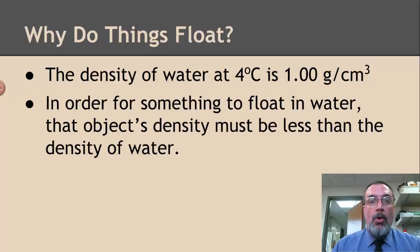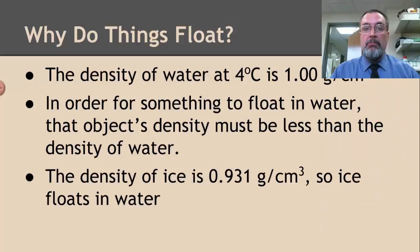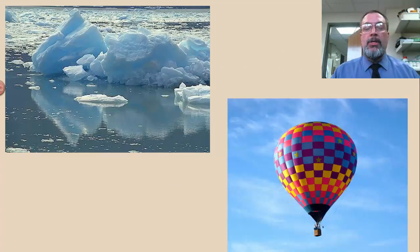So in order for something to float in the water, that object that's floating has to have a density that's smaller than 1. It has to be less than water's density. If that object has less density than 1, then it'll float. So ice, for example, has a density of 0.931. It's a little less than 1. That means ice is going to float in water. We see this. We see this with icebergs. Well, what about hot air balloons? Do hot air balloons float? Yeah, they float in the air.